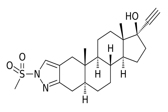Xanoterone, U.S.A.N., former developmental code name WN49596, also known as 5-alpha, 17-alpha-minus-1-methylsulfanol, HPREGN20YN0-3,2C-PYRAZOL170L, is a steroidal antiandrogen which was never marketed.